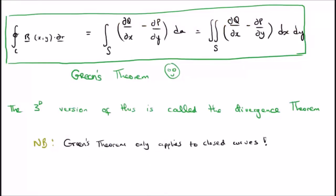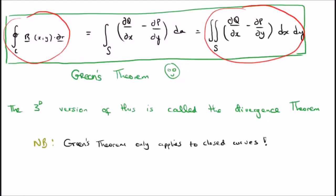I think it's useful to tell you in advance what Green's Theorem states — the bottom line up front. Green's Theorem shows that a closed line integral is equivalent to a double surface integral. There are some caveats and a bit of qualification to be done, but basically you go from a closed line integral to an open surface integral.